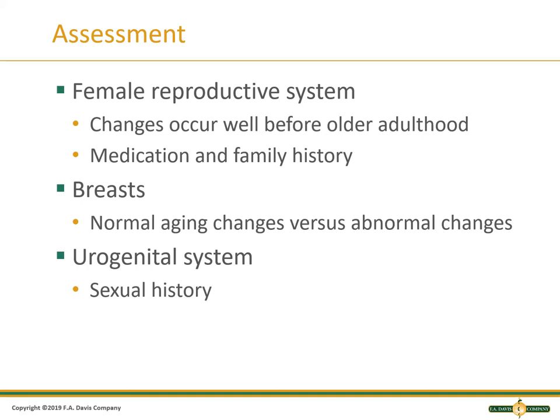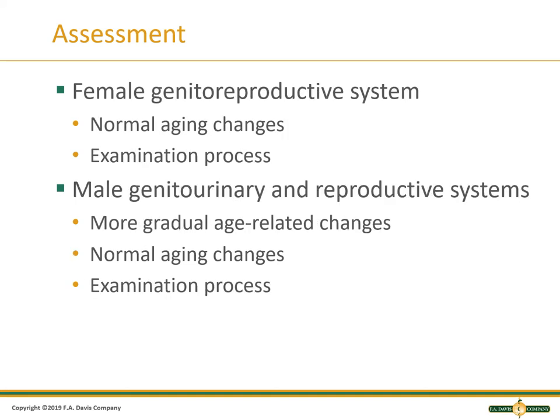Understanding the normal aging changes, reviewing them, assessing them, the examination process — seeing where the tenderness is, seeing if they have any history of lesions, if there's vaginal atrophy. Those are important things. Whereas men have the GU reproductive system with the prostate, the women have their own as well.